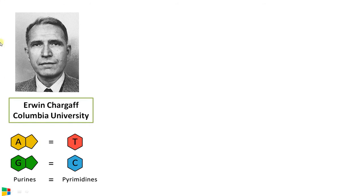According to Chargaff's rule, the amount of adenine equals the amount of thymine in a DNA molecule, whereas the amount of guanine equals the amount of cytosine. In other words, the amount of purine nitrogenous bases is equal to the amount of pyrimidine nitrogenous bases.